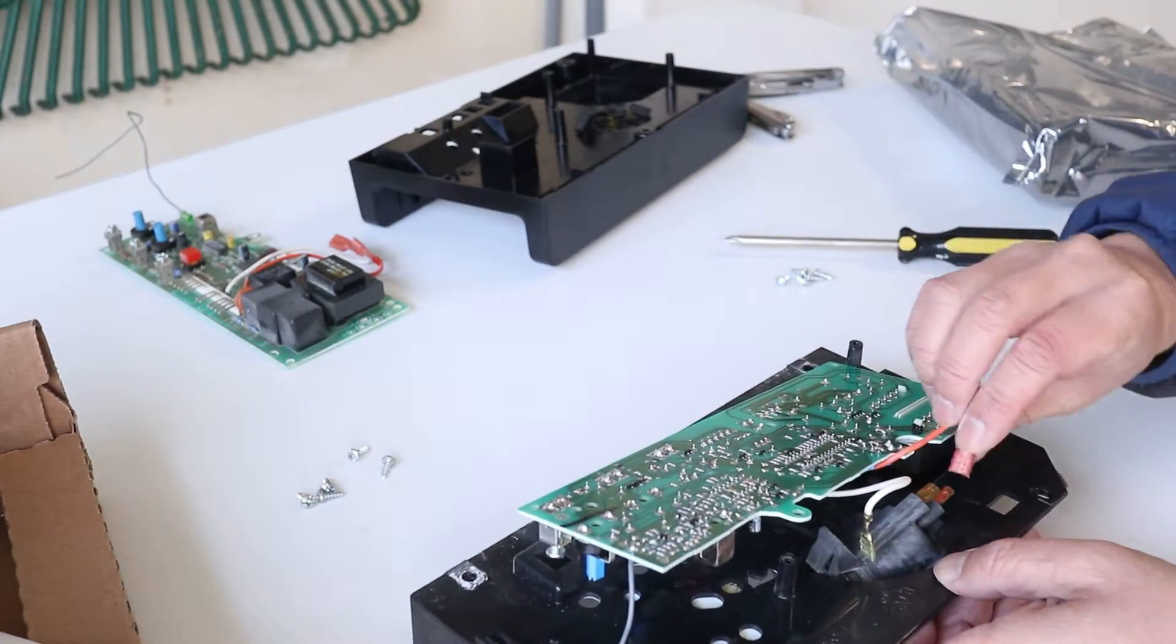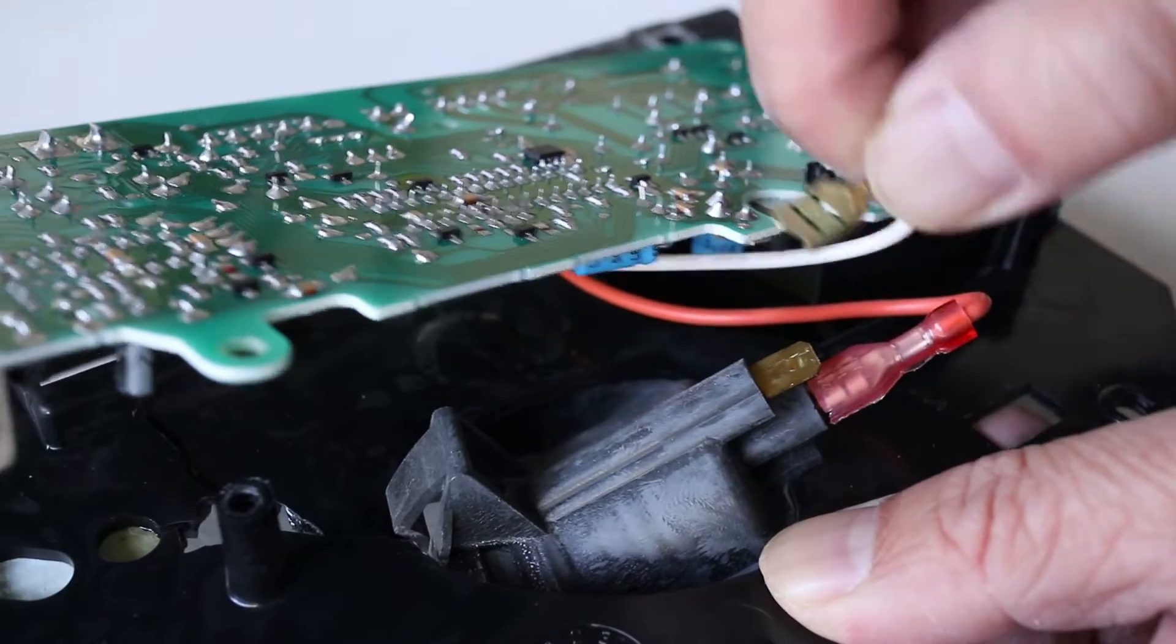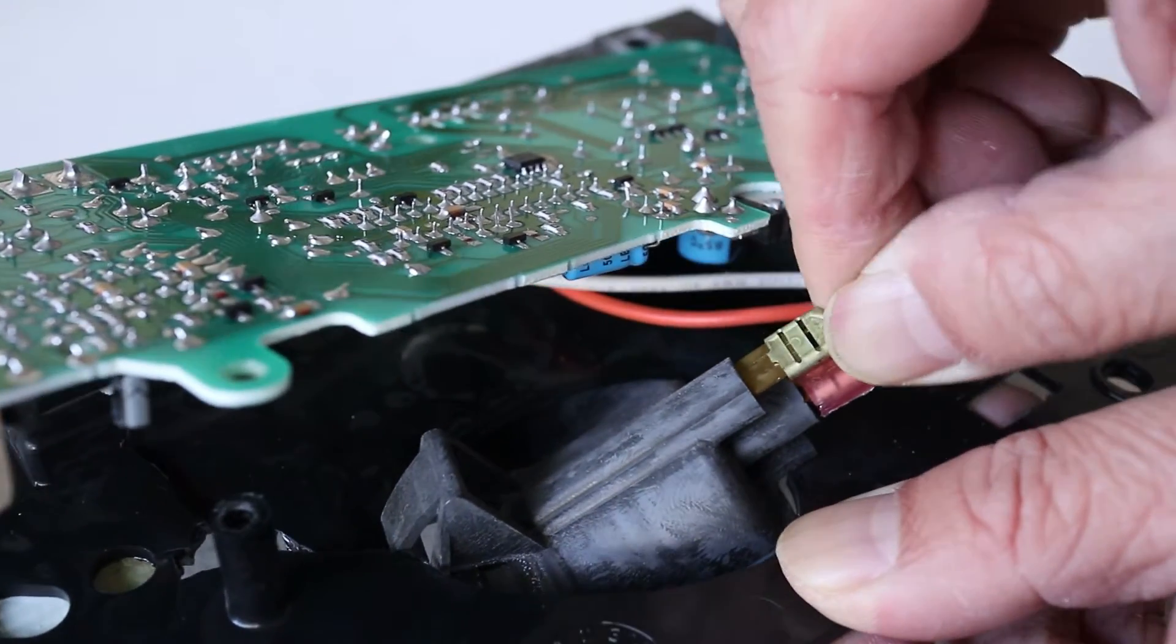Hopefully you took a picture of the wires on the light socket, but even if you didn't, I think the wire spades are different sizes to help you get the right ones on there.